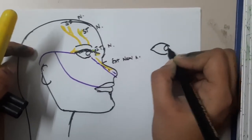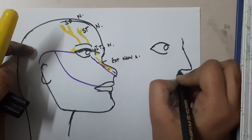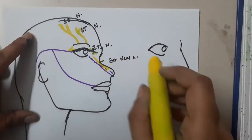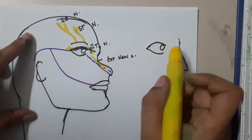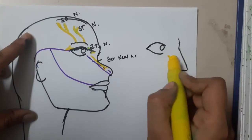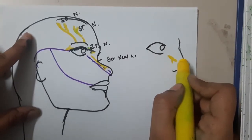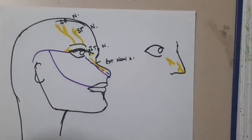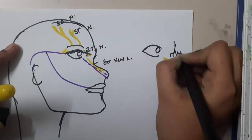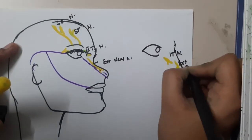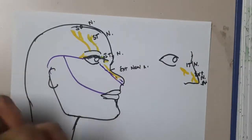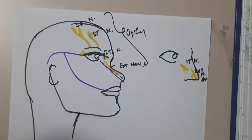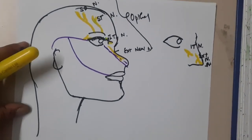To correct the diagram: the infratrochlear nerve is below the eye, not beside it. We also have the external nasal nerve here. These are the branches of the ophthalmic division of the trigeminal nerve.